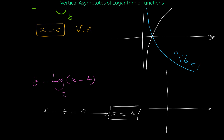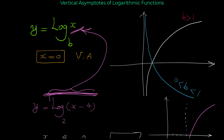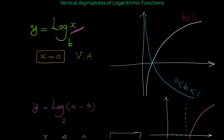If you draw this log function, you can see why x equals 4 is the vertical asymptote. The graph is shifted four units to the right compared to the original log function — that's a translation. But you don't need to think about it that way. Simply set whatever expression is inside the log equal to zero, and that gives you the vertical asymptote.